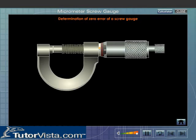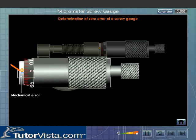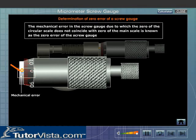Determination of zero error of a screw gauge. At times on bringing the flat end of the screw in contact with the stud, the zero of the circular scale does not coincide with the zero of the main scale. This is a mechanical error and is referred to as the zero error of the screw gauge. Depending on the position of the zero of the circular scale, the zero error is of two types, namely positive zero error and negative zero error.